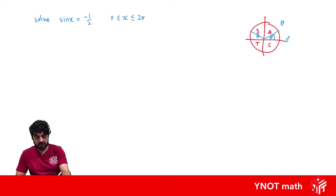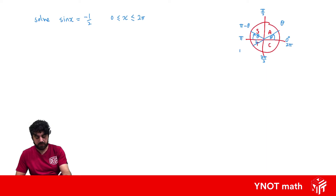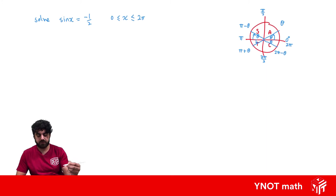Starting from 0 degrees, moving up to π/2, then π, then 3π/2, all the way back to 2π — we can think of the second quadrant angle as π minus the base angle, the third quadrant angle as π plus our base angle, and the fourth quadrant angle as 2π minus our base angle. That's a quick recap.